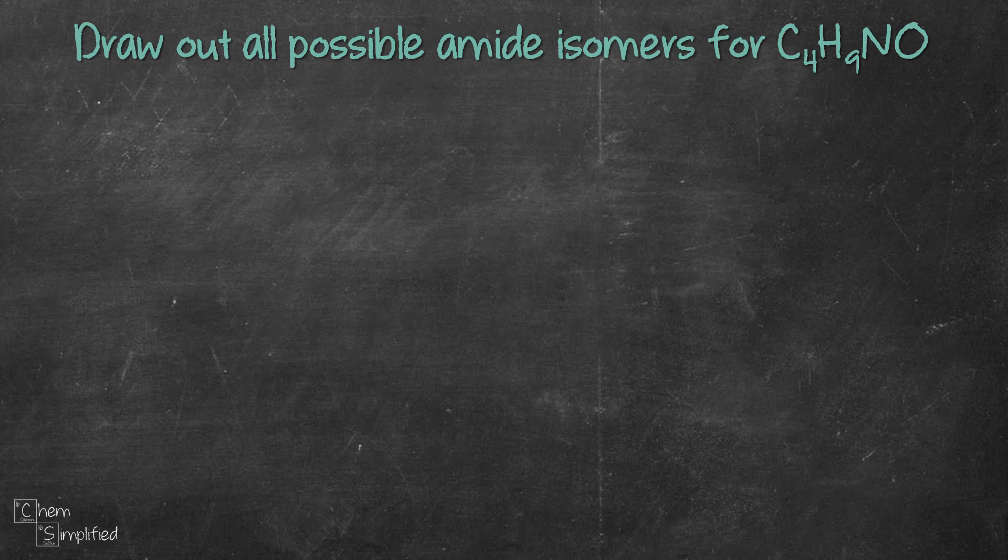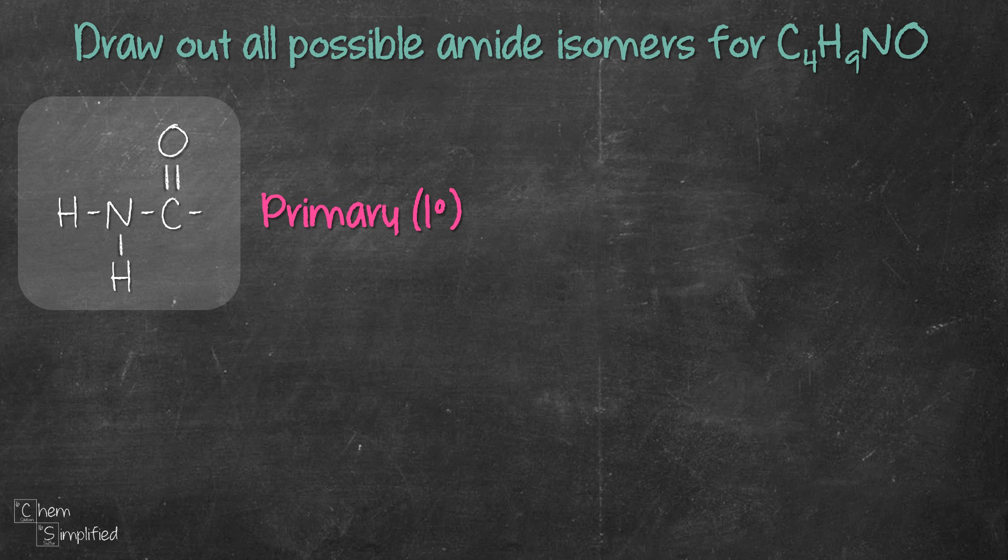A quick recap: amide consists of a carbonyl group C double bond O which is located right next to a nitrogen. Keep in mind that nitrogen makes three bonds, so the nitrogen will have two other bonds aside from the one that's connected to the carbonyl group. If the two bonds on the nitrogen are connected to hydrogens, then we have a primary amide since the nitrogen is connected to one carbon.